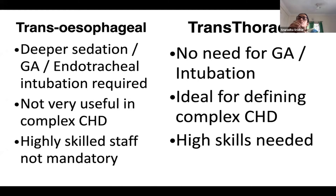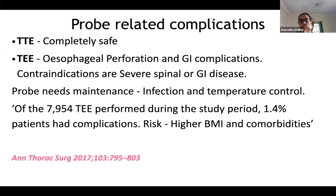Trans thoracic echo requires highly skilled staff and a skilled echocardiographer to assist during intervention, whereas this is not as mandatory for trans esophageal echo. Trans thoracic probes are completely safe, whereas there are probe-related complications with trans esophageal echo — GI complications are reported and GI disease is a contraindication. A study published in 2017 among nearly 8,000 trans esophageal echos found a 1.4% complication rate, higher with higher BMI and comorbidities, though TEE is still considered a safe procedure.